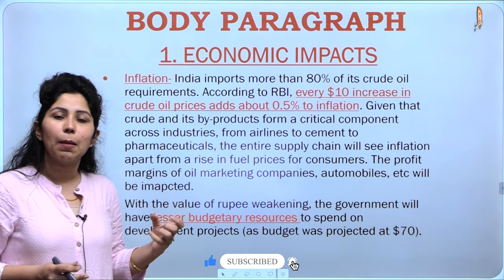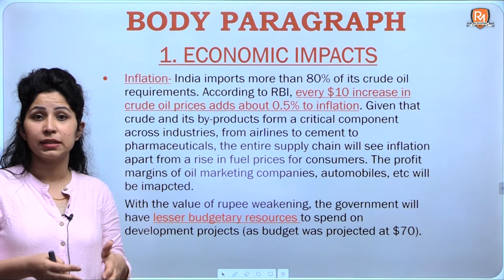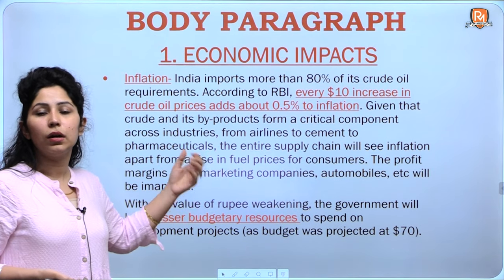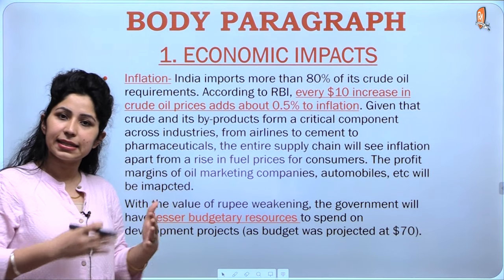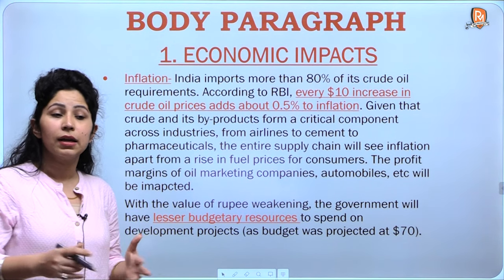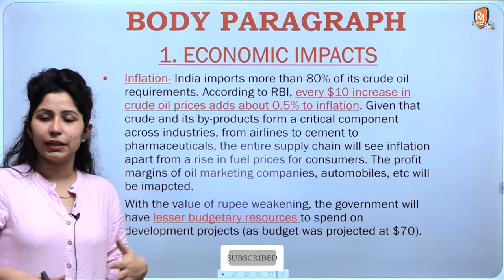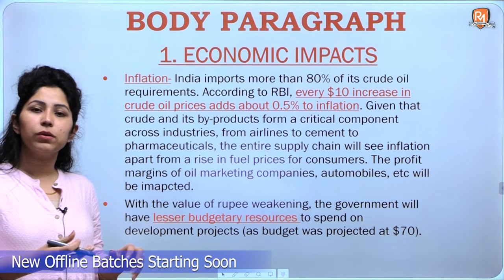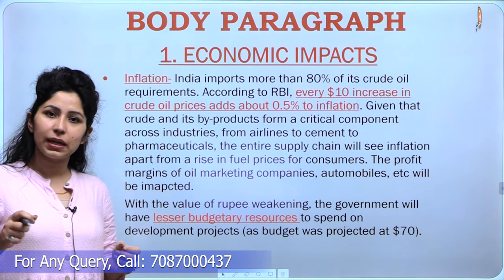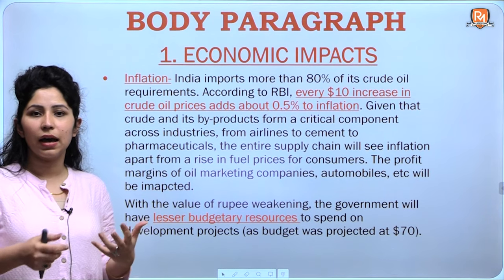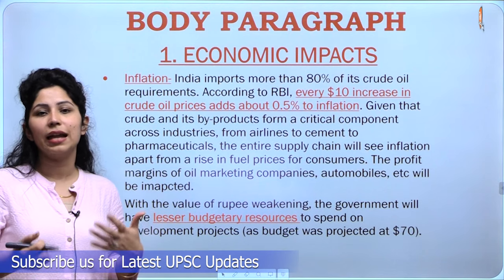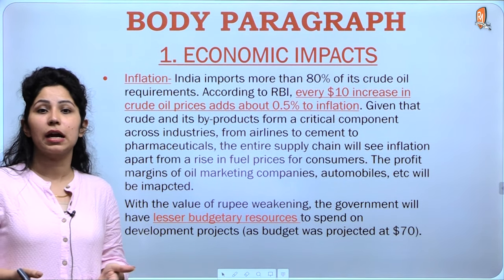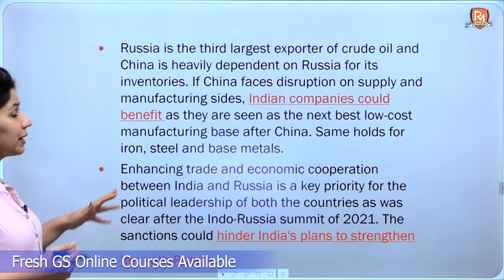Oil marketing companies had already seen a convergence in their profits. The automobile industry had been going through a slowdown since before even the COVID-19 pandemic, and these companies will again see a slowdown. They cannot increase their prices beyond a certain point — that window was already utilized in 2021 — and they will see huge losses. The second point is the value of the rupee going down against the dollar, meaning the budgetary resources the government was allocating to projects are decreasing, leaving lesser resources available for the growth and development of the country.